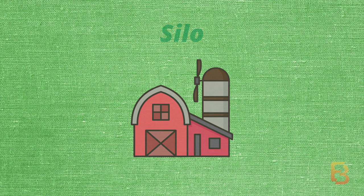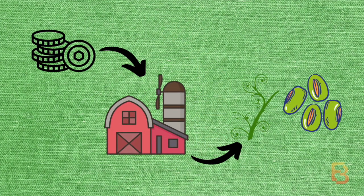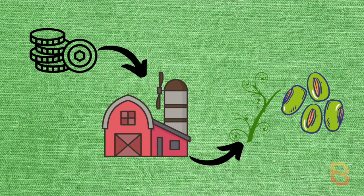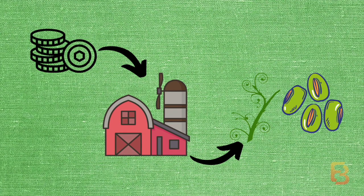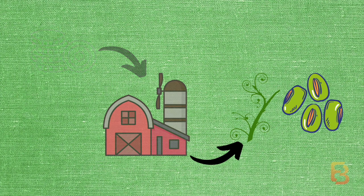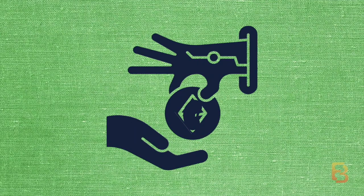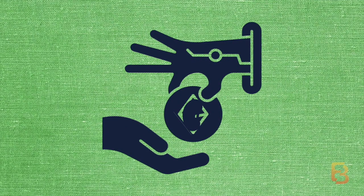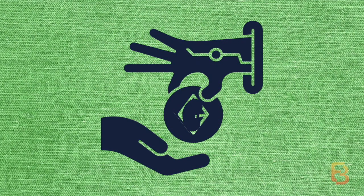Bean and LP tokens can be deposited into the Silo to earn Stock and Seeds. Users who deposit LP tokens receive twice as many Seeds per Bean deposited compared to Bean depositors. Lastly, you have the Field, which is the decentralized credit facility — essentially the lending arm of the protocol.